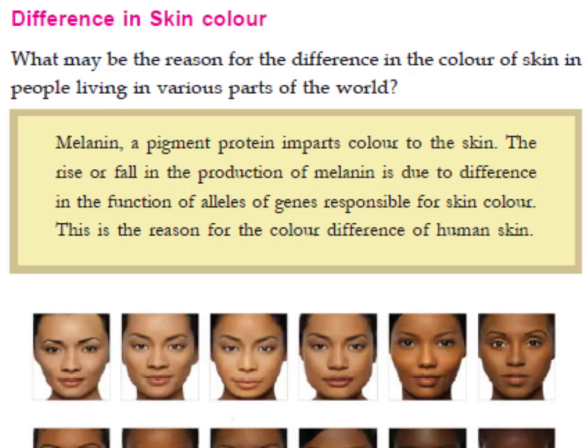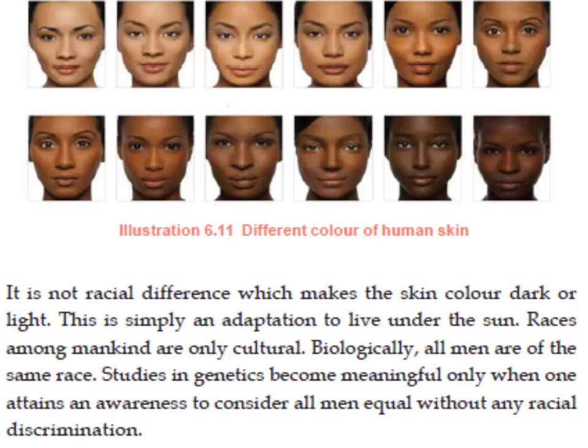Melanin, a pigment protein, imparts color to the skin. The rise or fall in the production of melanin is due to the difference in the function of alleles of genes responsible for skin color. This is the reason for the color difference of human skin. It is not racial difference which makes the skin color dark or light.